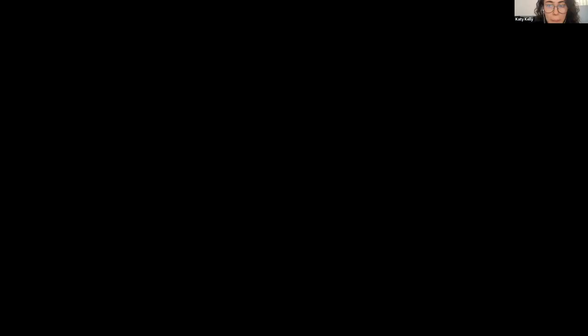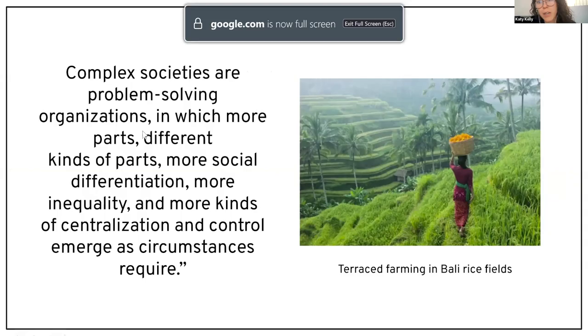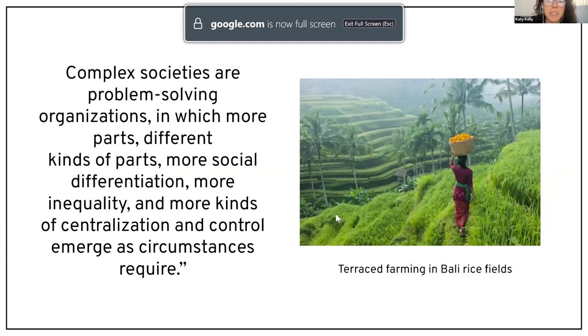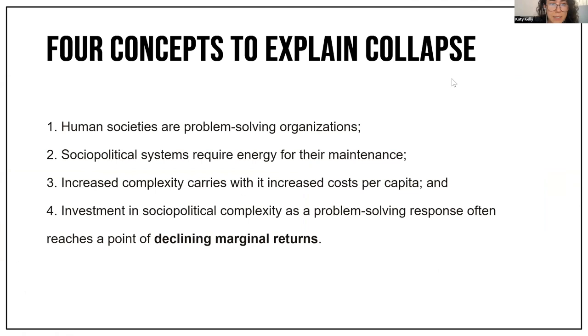Before the first question, I'll briefly summarize some of the main ideas in the book. As defined by Dr. Tainter, complex societies are problem-solving organizations in which more parts, different kinds of parts, more social differentiation, more inequality, and more kinds of centralization and control emerge as circumstances require.